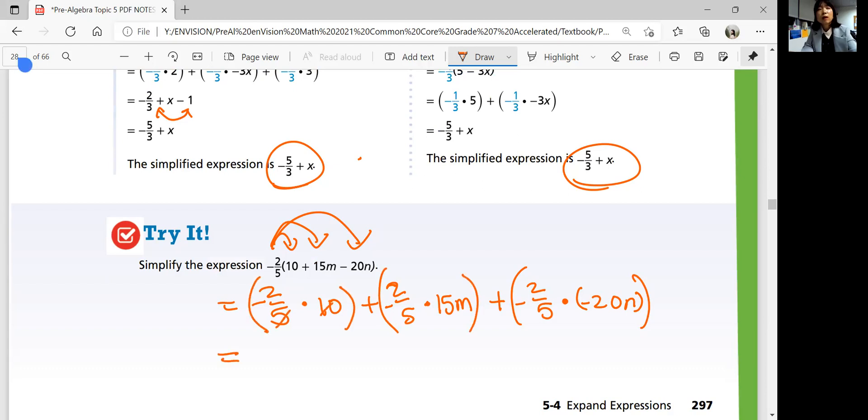And so simplifying that, negative 2 over 5 times 10, you can simplify fractions like this, numerator and denominator. If you can divide them by the same number, you can simplify it and then multiply. So 2 times 2 is 4. And negative 2 over 5, again, divided by 5.